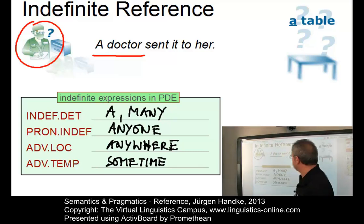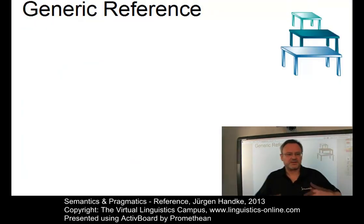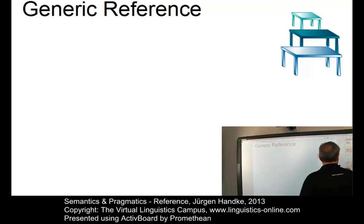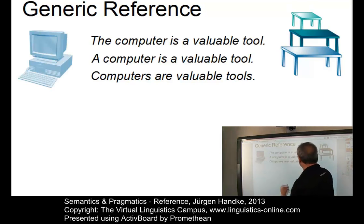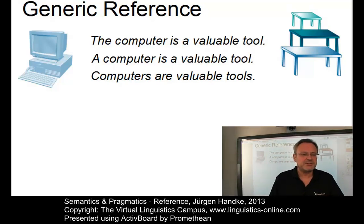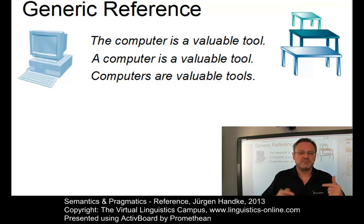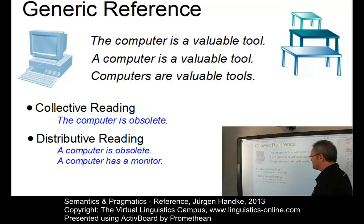There are instances where potentially referring elements such as nouns do not pick out a particular entity but refer to a class of reference — this is called generic reference. For example, all three sentences 'The computer is a valuable tool,' 'A computer is a valuable tool,' and 'Computers are valuable tools' have readings involving generic reference. Each states that being of great use is a general characteristic of the members of the class of computers. Sentences involving generic reference may make statements about the whole class — called a collective reading.